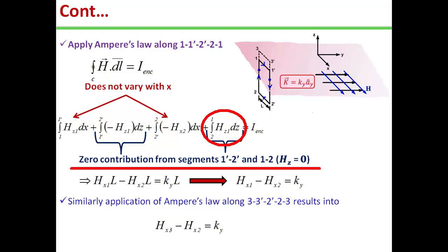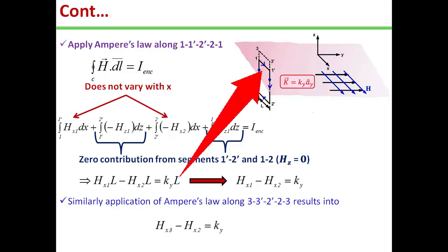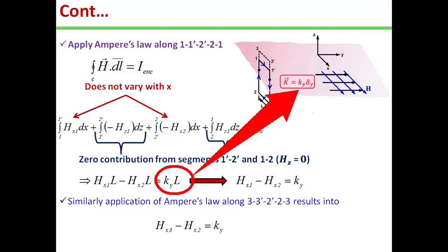Plus integral 2' to 2 minus H_x2 dx plus integral 2 to 1 H_z2 dz, and this will be equal to I enclosed. In this equation, second and fourth term will provide zero contribution for the segments 1'-2' and 2-1, because we have H_z component is 0. So finally we will have H_x1 L minus H_x2 L is equal to K_y L.